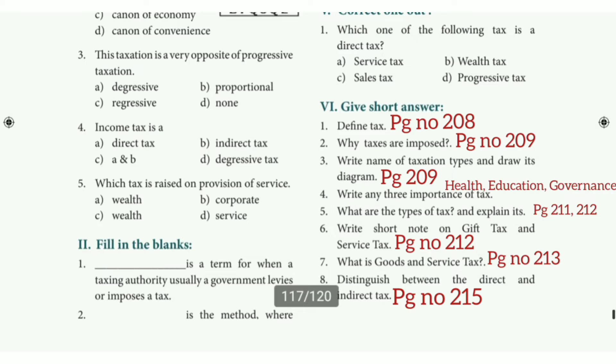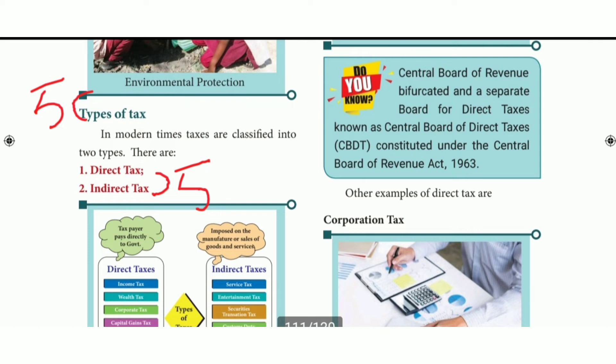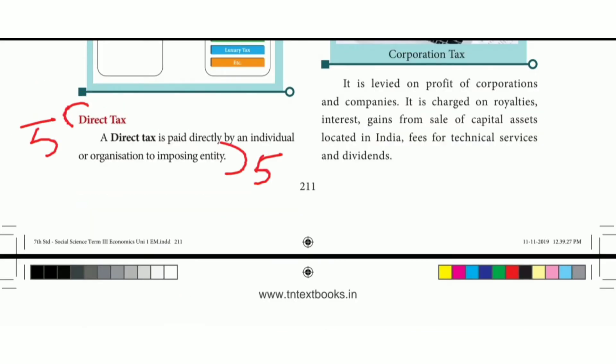Fifth question: what are the types of tax and explain? Refer to page numbers 211 and 212. There are two types of tax — refer to the picture key and the direct tax section.